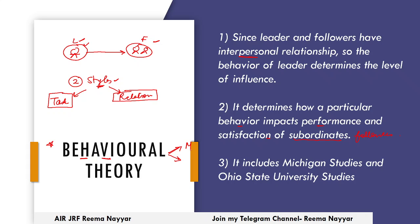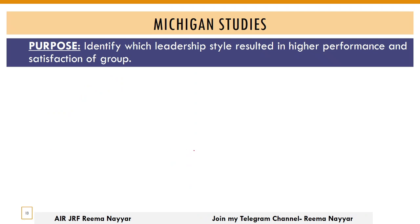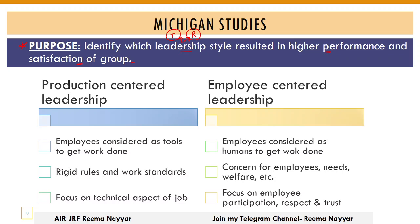In both Michigan and Ohio studies, these two leadership styles appear — one task-oriented and one relationship-oriented — though the names will be slightly different; the concept remains the same. The purpose of Michigan Studies was to identify which leadership style resulted in high performance and satisfaction of the group. There are two styles — task-oriented and relationship-oriented — which one do you think results in high performance? Guess and we'll verify.